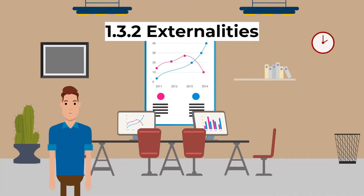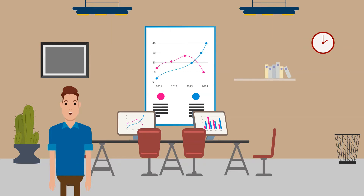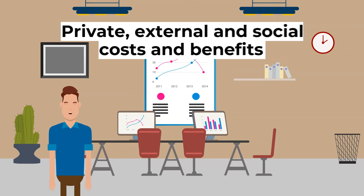When there are asymmetric markets, the government provides information to allow people to make informed decisions. For example, they provide information on smoking and drink driving. They may also force companies to provide information about their product. Let's look more closely at private, external, and social costs and benefits.